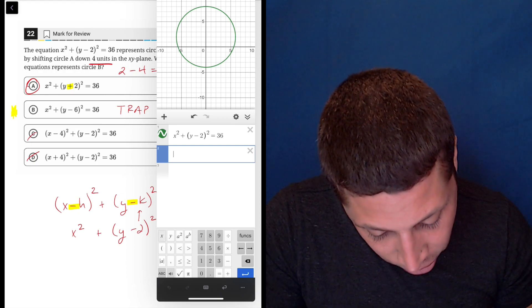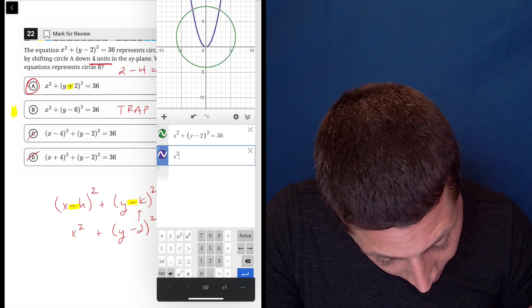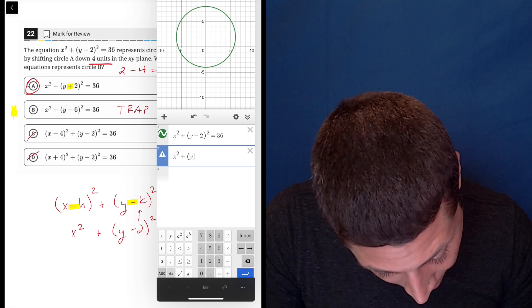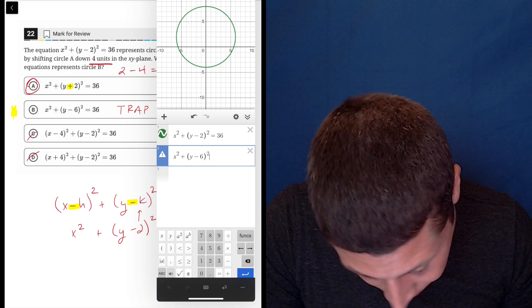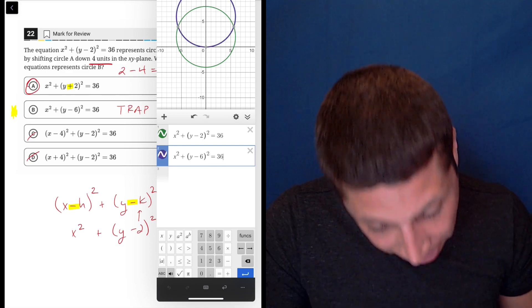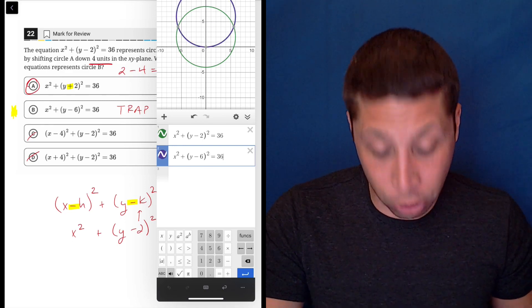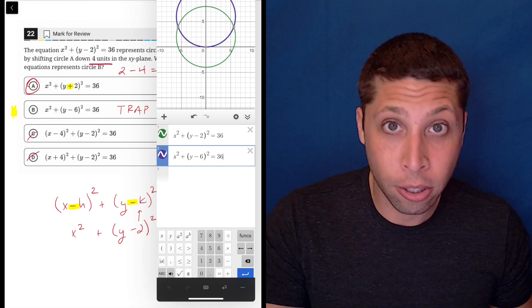So choice B is probably my hunch. So we're going to graph that. Let's just do x squared plus parentheses y minus 6 squared is equal to 36. So pay attention. Look at the green is my original and my purple is choice B.